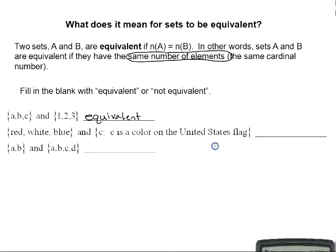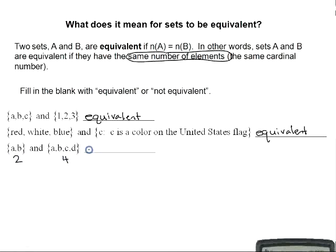The set {red, white, blue} and the set of all C such that C is a color on the United States flag are also equivalent, since both contain three elements. However, the set {A, B} has a cardinal number of 2 and the set {A, B, C, D} has a cardinal number of 4, so these two sets do not have the same number of elements and are not equivalent.